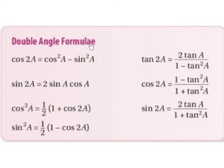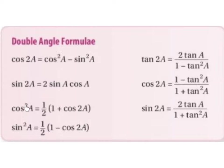Here we have the double angle formulae that can be used to prove many different identities. Cos of 2a equals cos squared a minus sine squared a. Sine of 2a equals 2 sine of a cos of a. Cos squared a equals 1 half times 1 plus cos of 2a. Sine squared a equals 1 half times 1 minus cos of 2a.